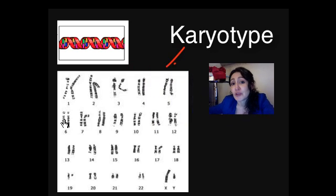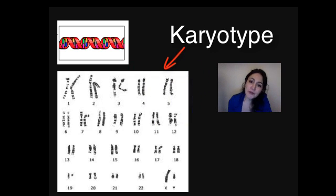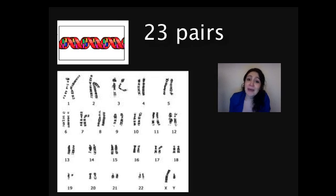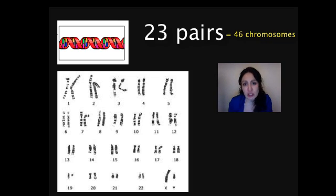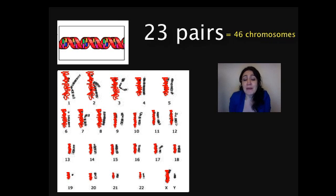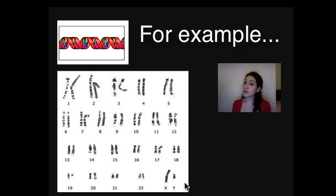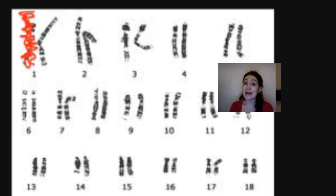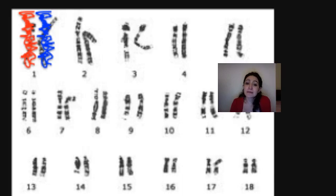This is an example of a human karyotype. If you count the chromosomes in this karyotype you'll find that we have 23 pairs of chromosomes — that's also 46 chromosomes in total. That means you inherited 23 from mom and 23 from dad. Since there are 23 pairs, that means you inherited one chromosome one from mom and one chromosome one from dad.